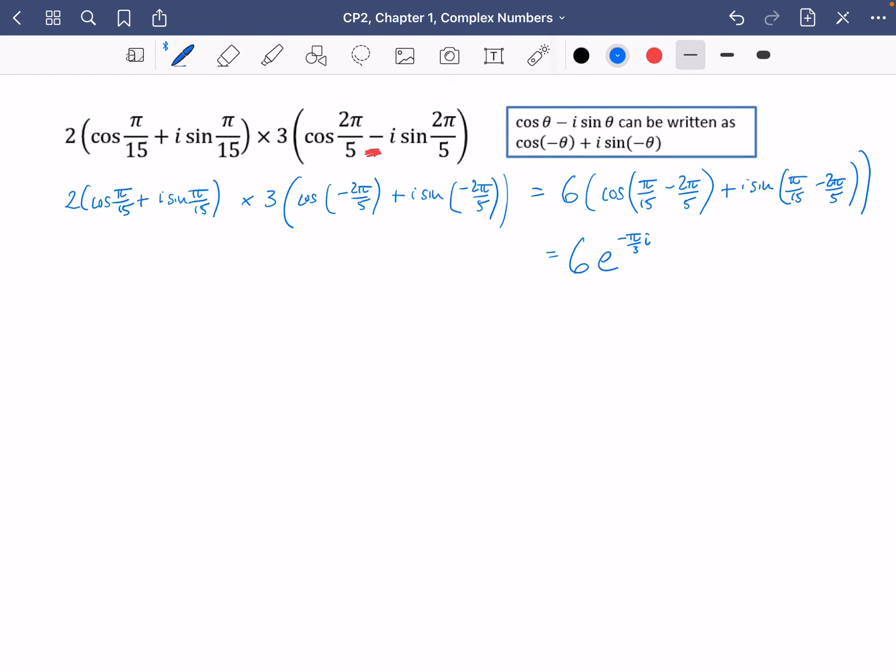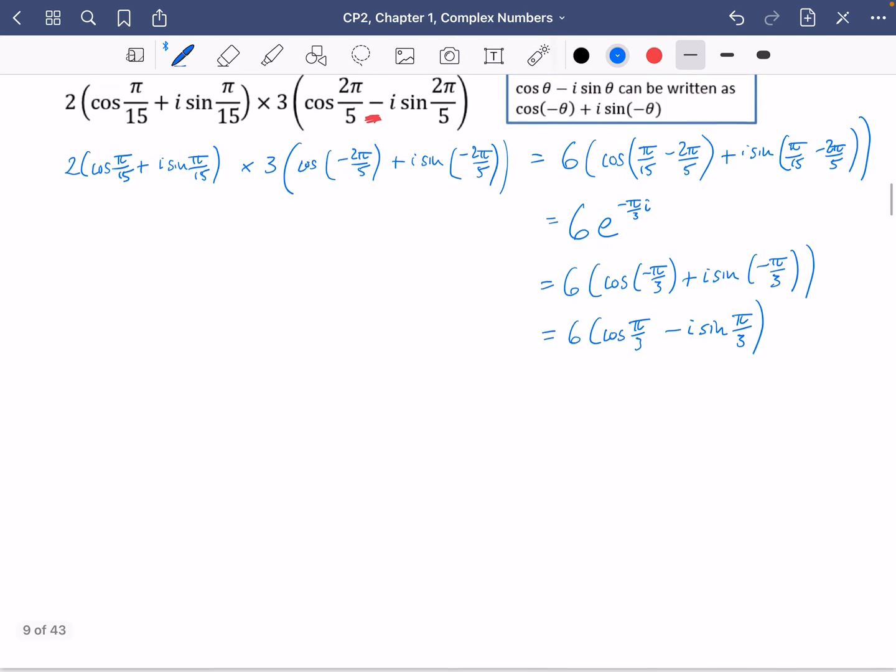I decided to put it in exponential form just because it seems to be a bit of a quicker way of writing that. Obviously, if they asked for it in the modulus argument form, you would have written it as 6 cos of minus pi over 3 plus i sine of minus pi over 3. And if they wanted you to write that so that it didn't have a negative argument, you could have said that it is 6 cos of pi over 3 minus i sine of pi over 3. So all of those lines there show equivalent statements.